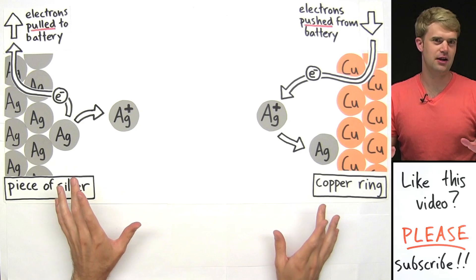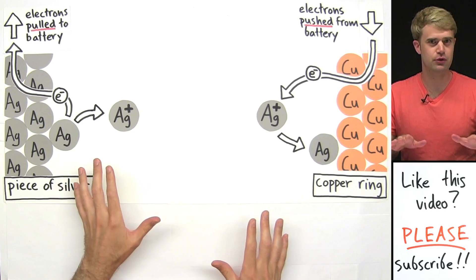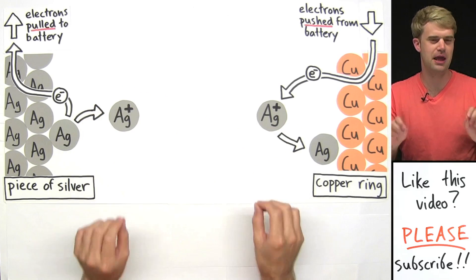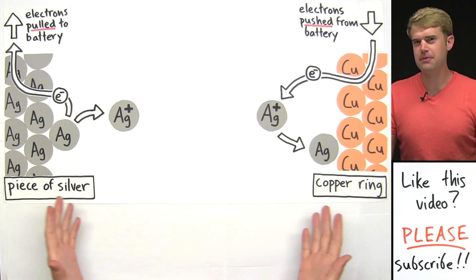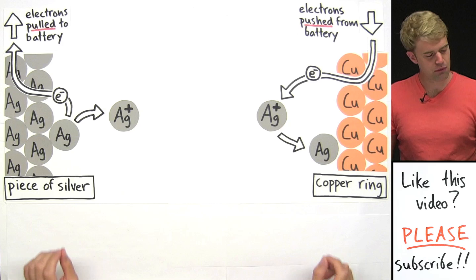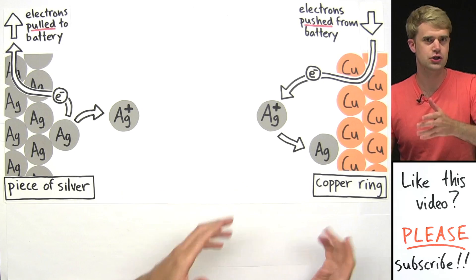In the previous video, I showed the electroplating process by moving a bunch of papers around, sort of animating it. Here I'm going to be using a diagram that doesn't move, that's a lot more like what you'd see in a textbook or on a worksheet.